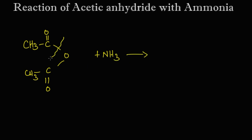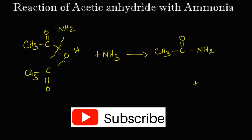The bond gets cleaved between the carbon and oxygen. The NH2 group is attached to one part, and the hydrogen is attached to the CH3COO part. So we get CH3C(=O)NH2 — this is acetamide.